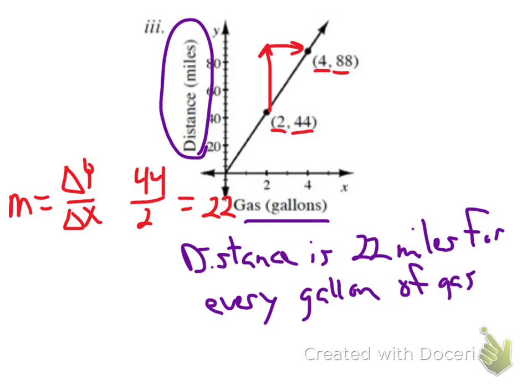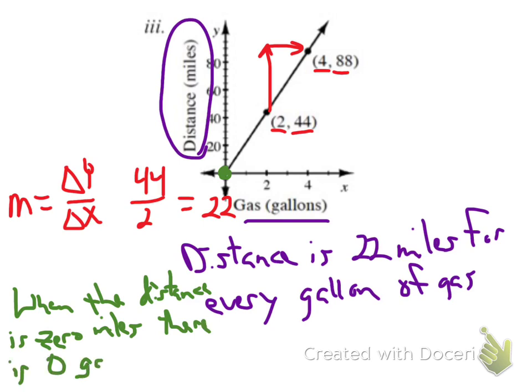On this one, the y-intercept is at zero. So when the distance is zero miles, there's zero gas. So I'm guessing it would represent the amount of gas used per distance, but it doesn't specifically state that for the problem. So we're just going to go with that.